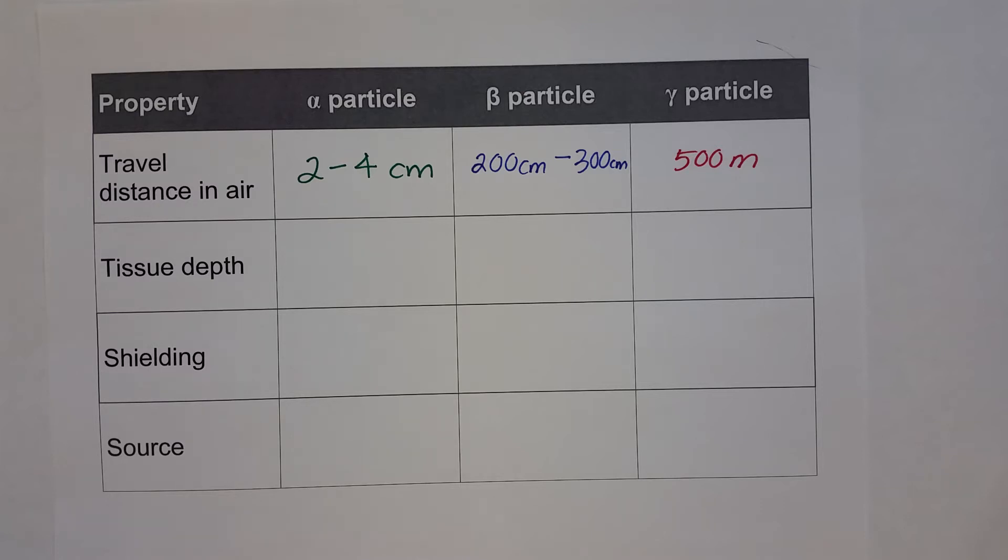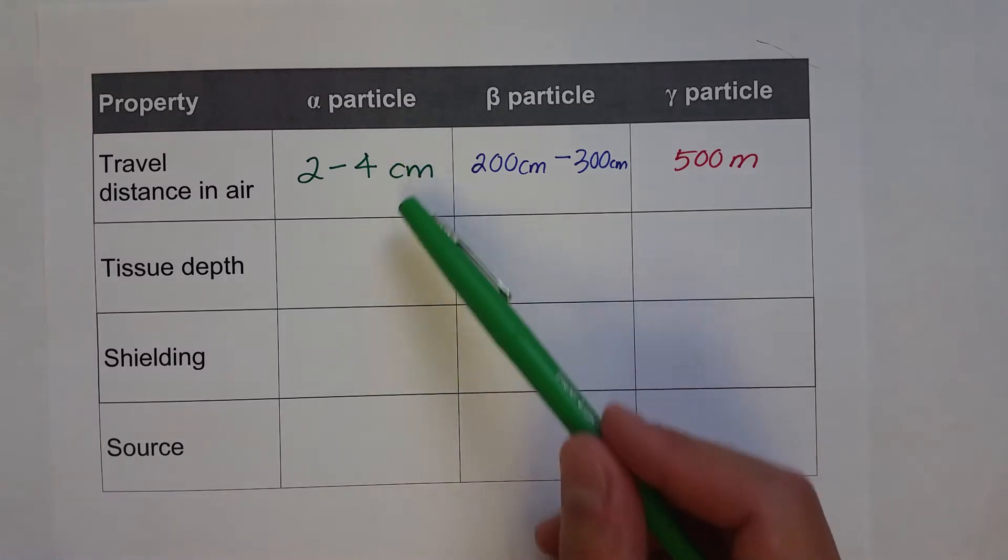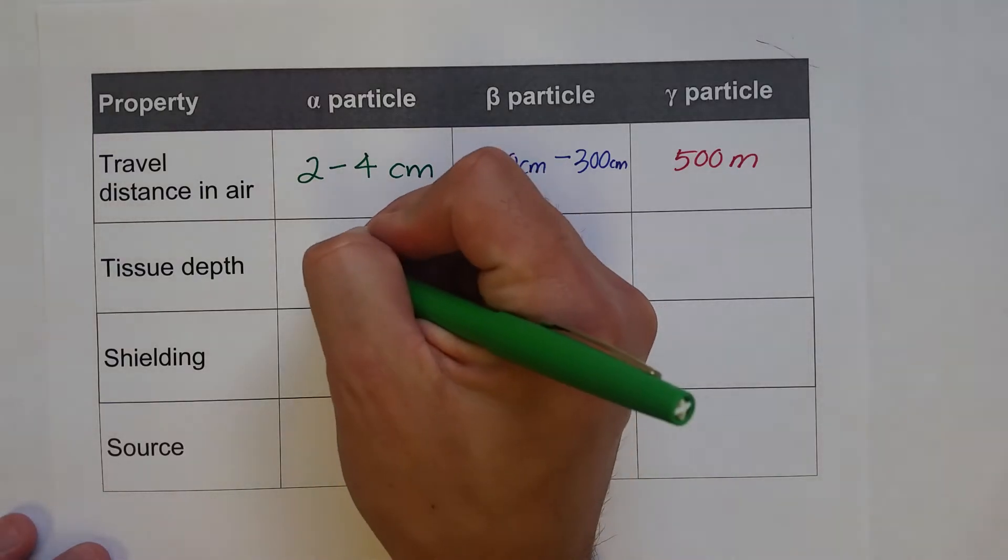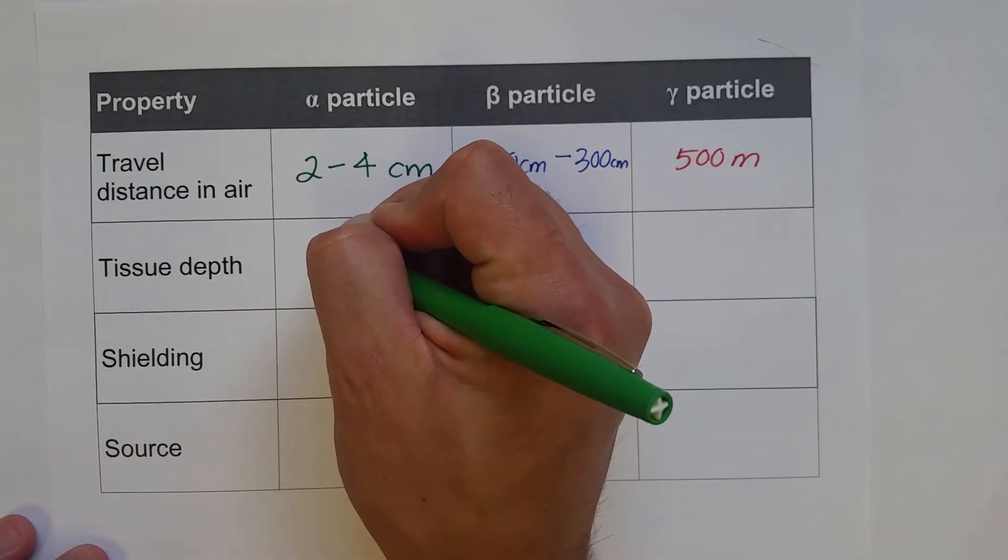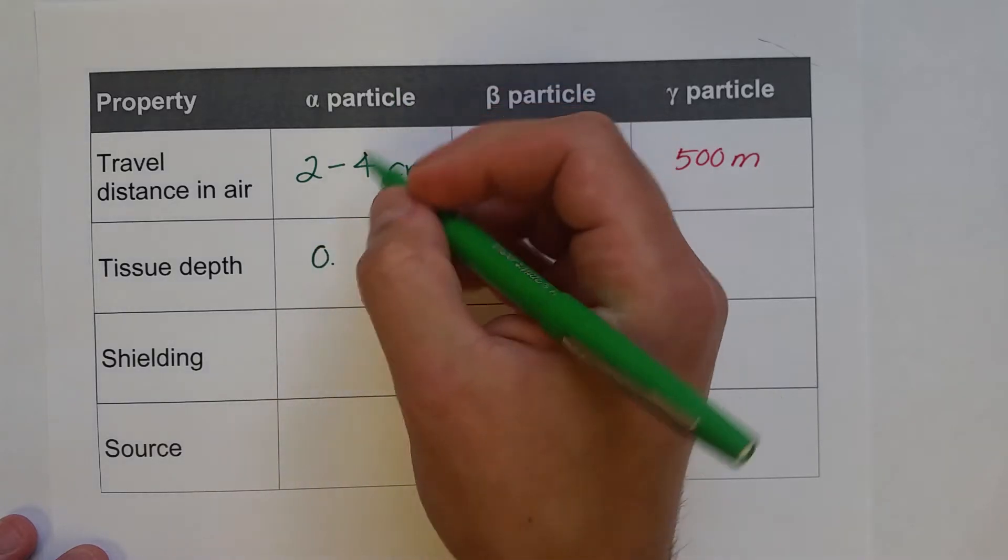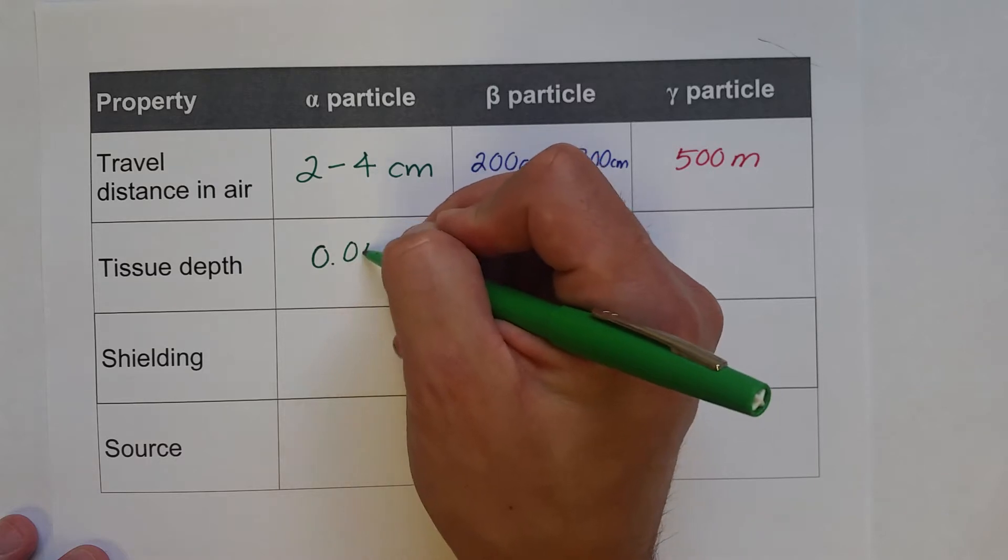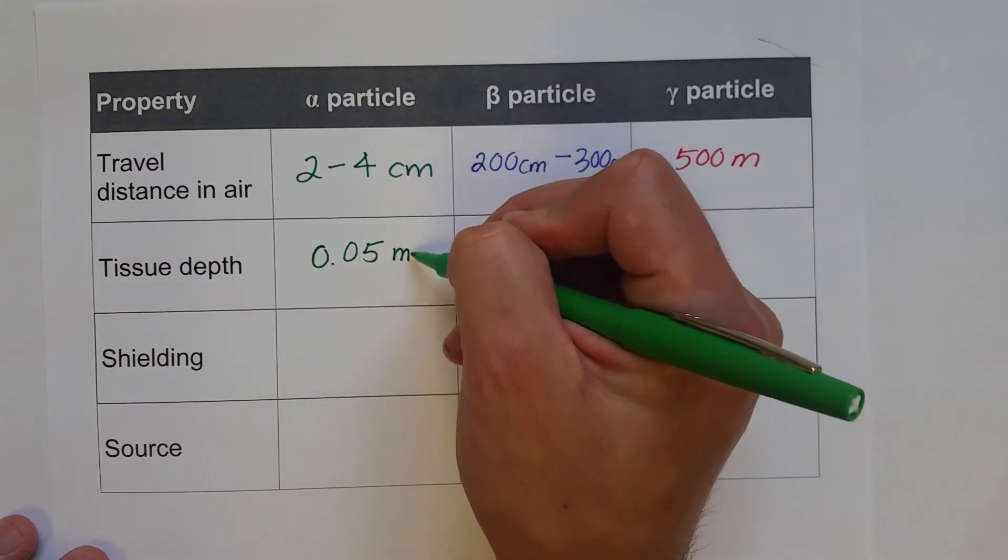As can be expected, the tissue depth would follow the same pattern, where the alpha particle, since it's the largest, would run into things a lot more quickly, has the least distance that can travel through tissue, only going about 0.05 millimeters.